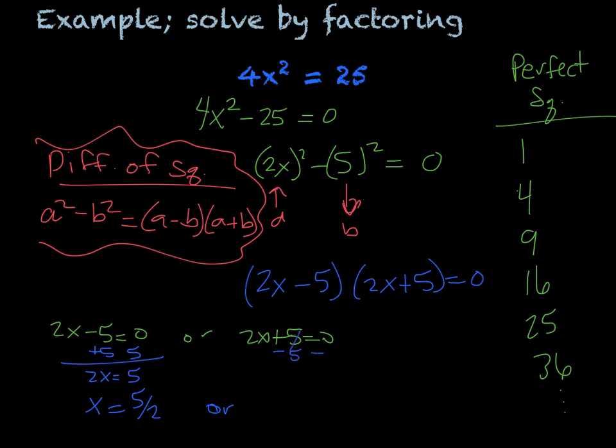Or subtract the 5 over, 2x = -5, then we divide by 2, and x = -5/2. So those would be my final answers for this problem. So we need to recall what our difference of squares is.